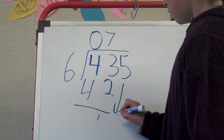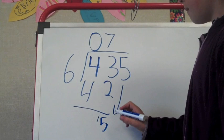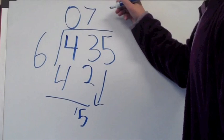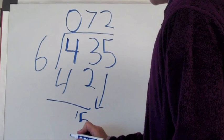Next to the 1, that makes 15. Then see how many times 6 goes into 15. That is 2. Bring the 2 next to the 7 on top and do 2 times 6, which is 12.